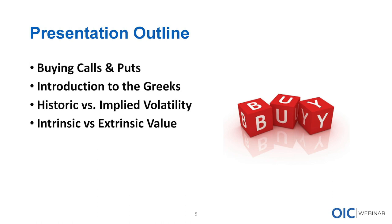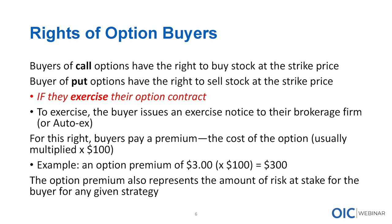Our presentation outline today: we're going to talk about buying calls and puts, give an introduction to the Greeks - the different ways of measuring your risk as it relates to options trading - then get into historical versus implied volatility, and cover intrinsic versus extrinsic value. As an option buyer, the best thing is that you have rights. Buyers of call options have the right to purchase stock at the strike price. Buyers of put options have the right to sell stock at the strike price. People typically buy a call when they forecast the stock price to go up, and buy a put when they forecast the stock price to go down.